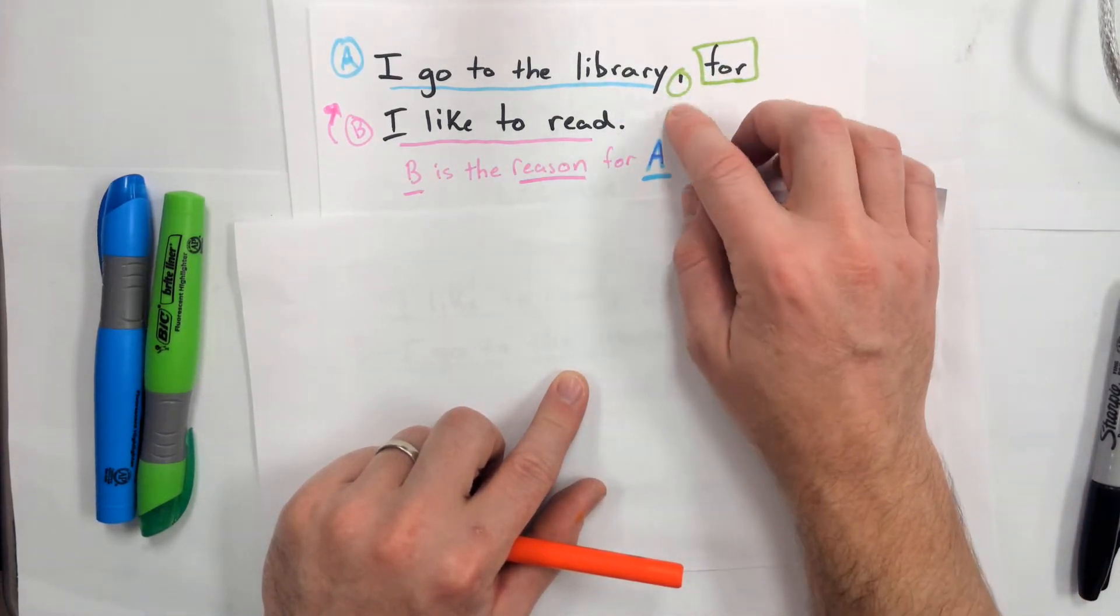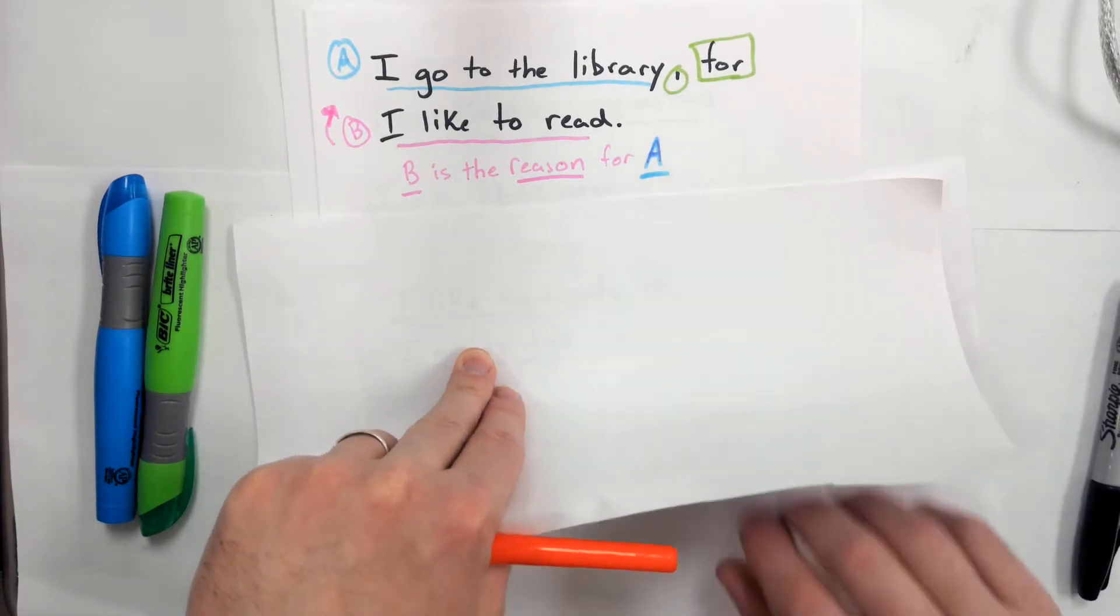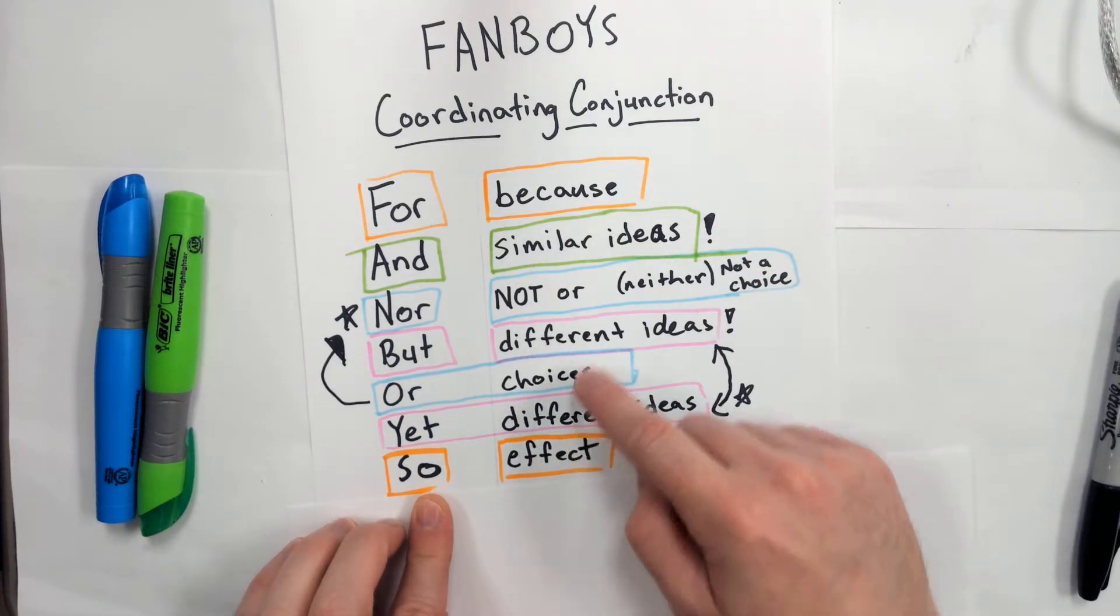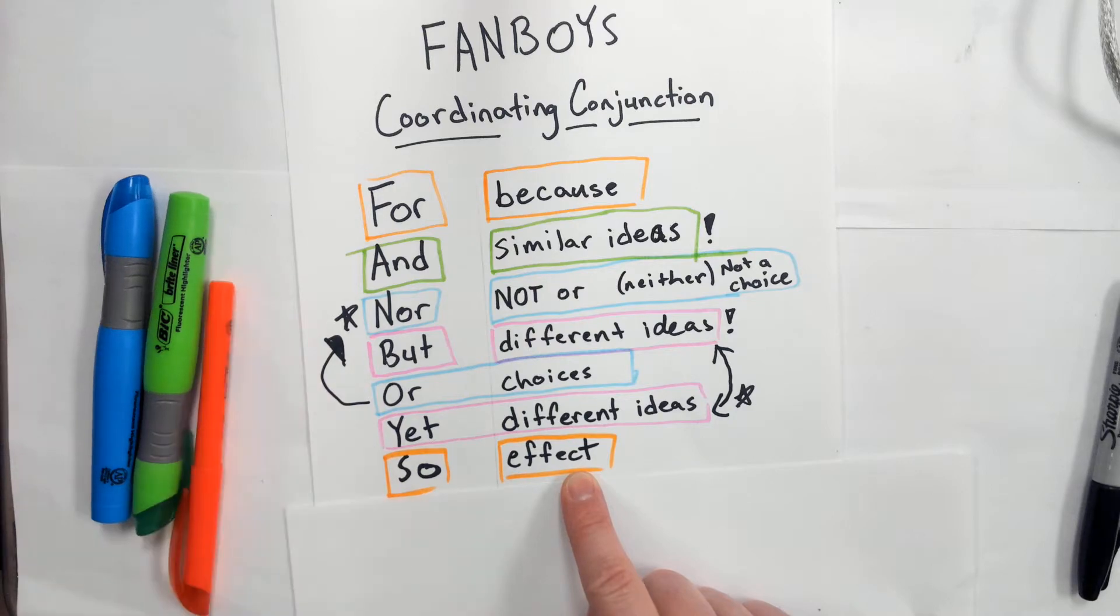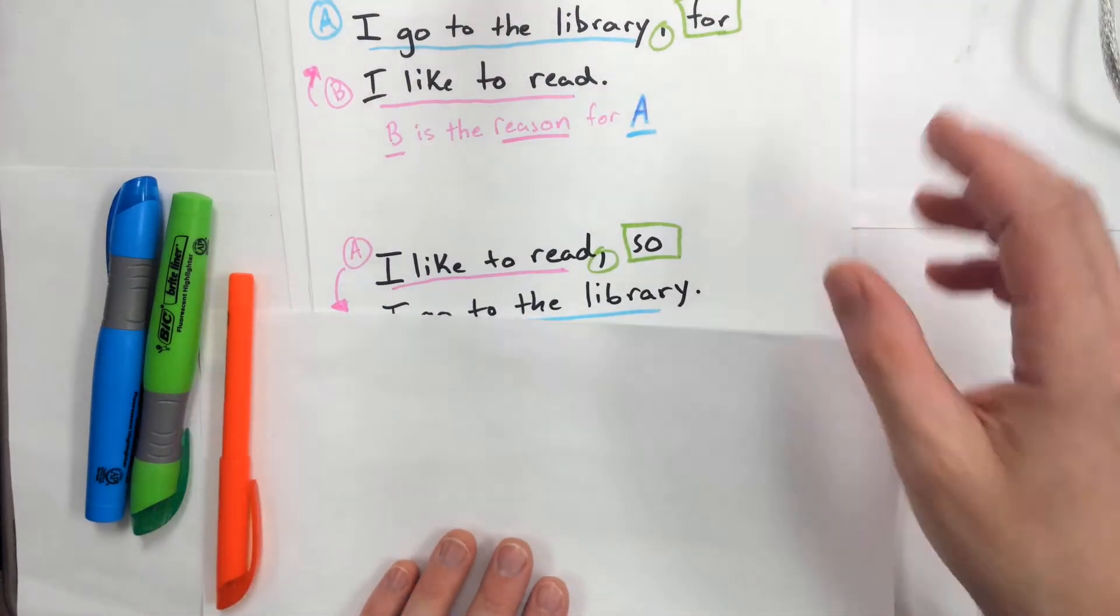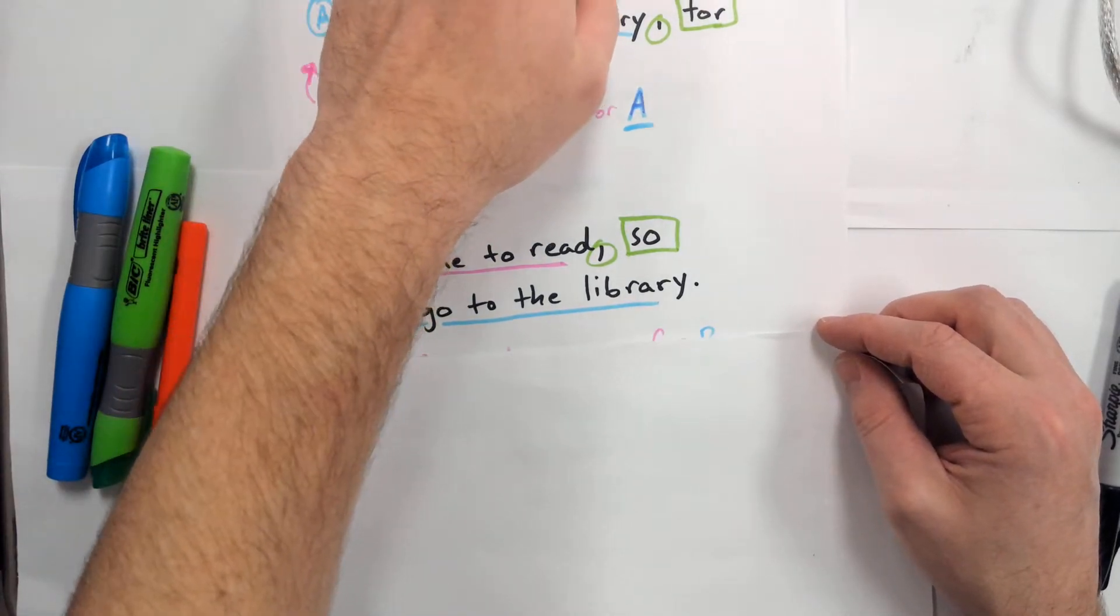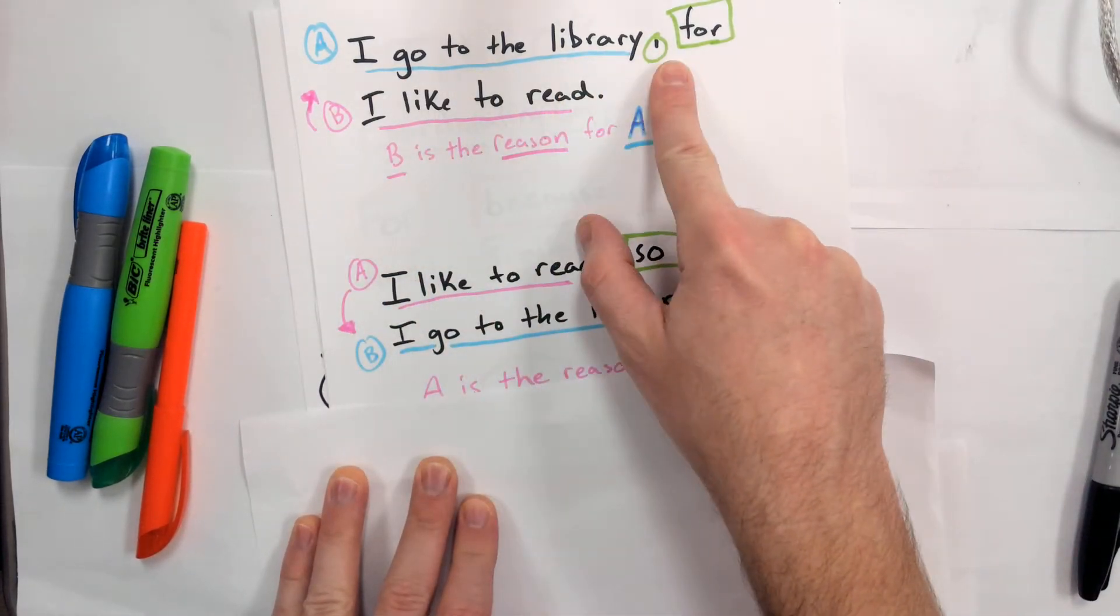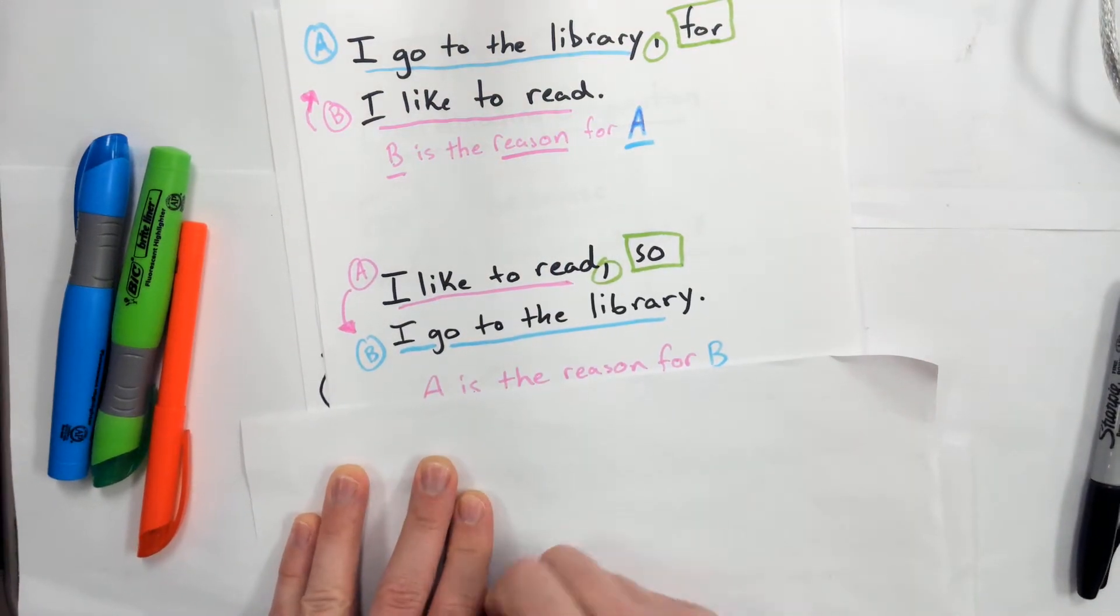Now let's look at 'so.' Notice how they're very similar, except 'so' is telling us an effect of something. We have a similar sentence, right? The first sentence said 'I go to the library, for I like to read.' This sentence says 'I like to read, so I go to the library.'